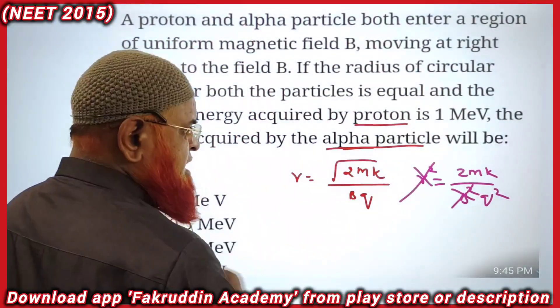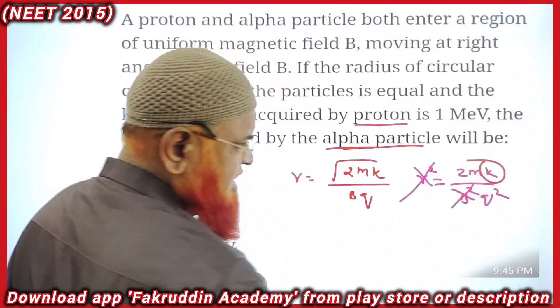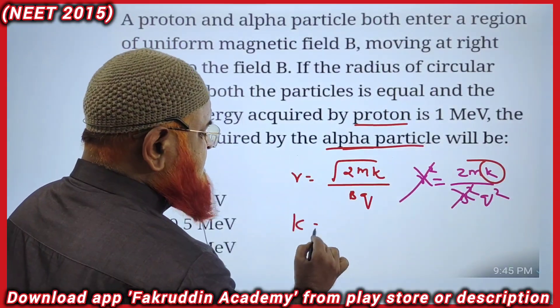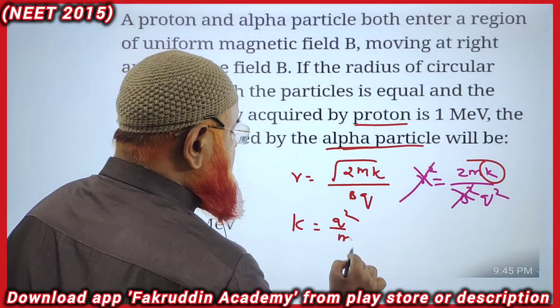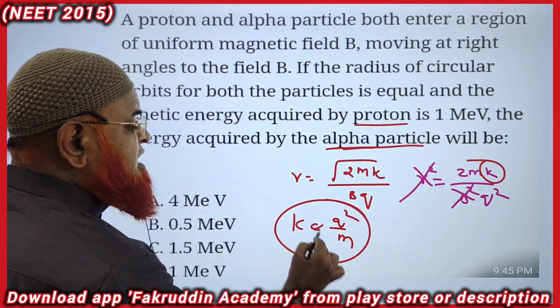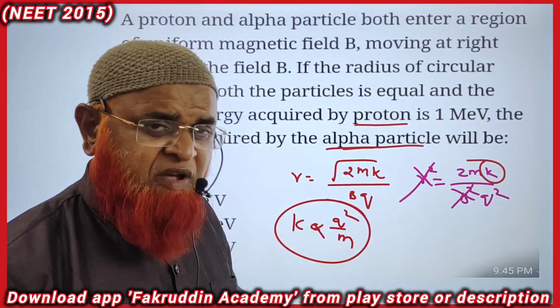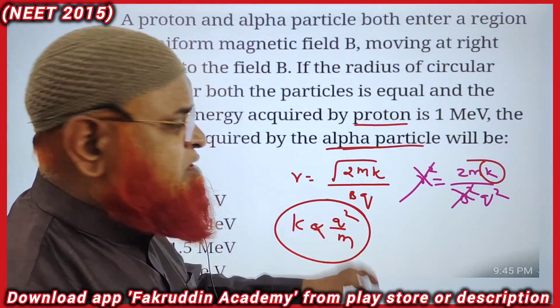From this, K equals Q²/m. This is the relation we are getting. K is directly proportional to Q²/m.